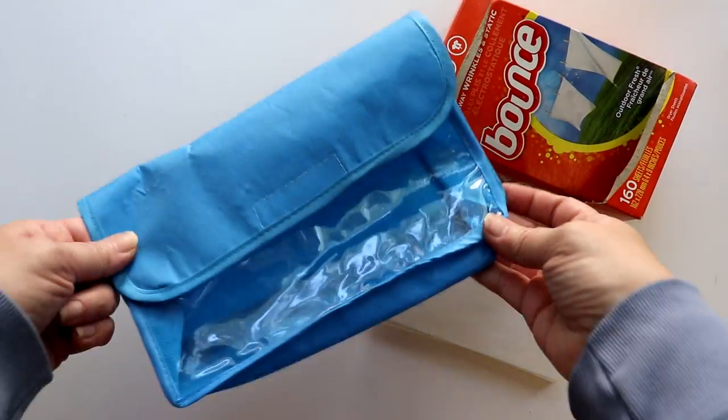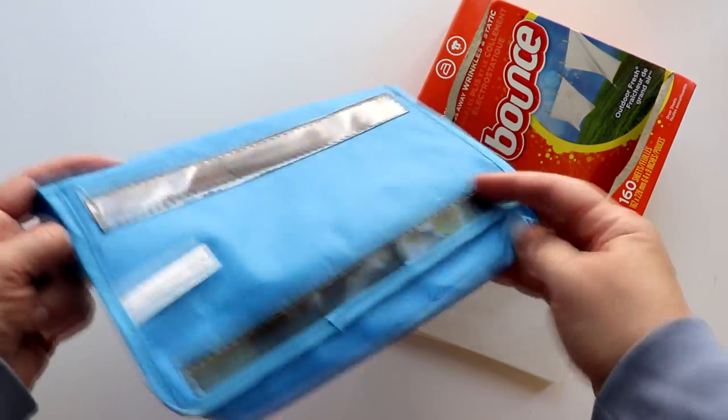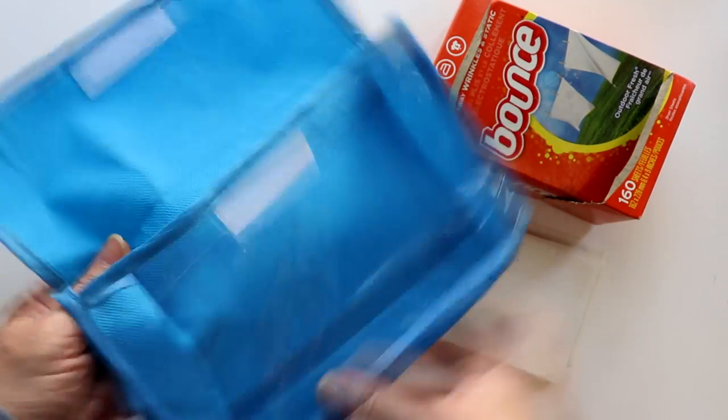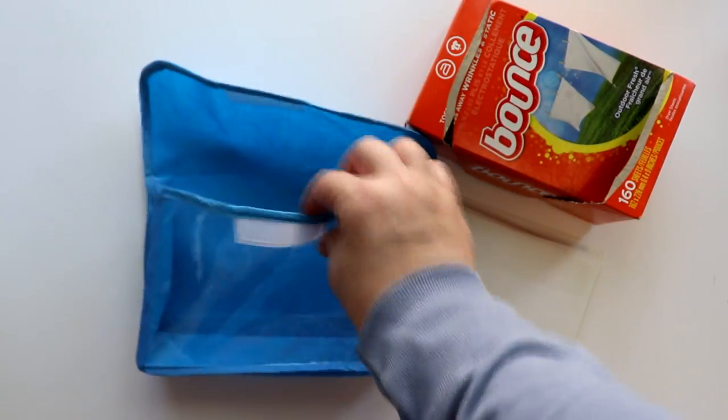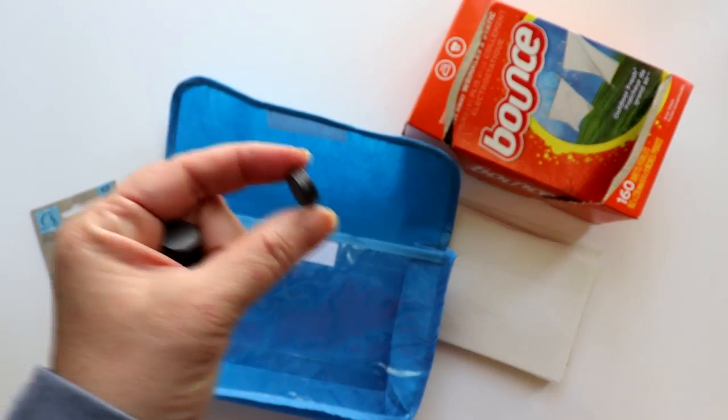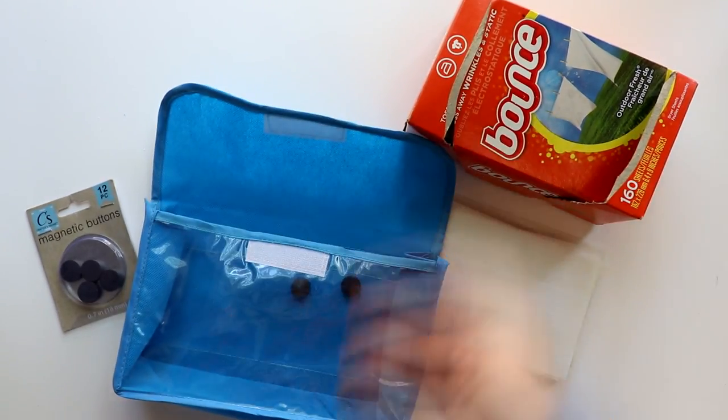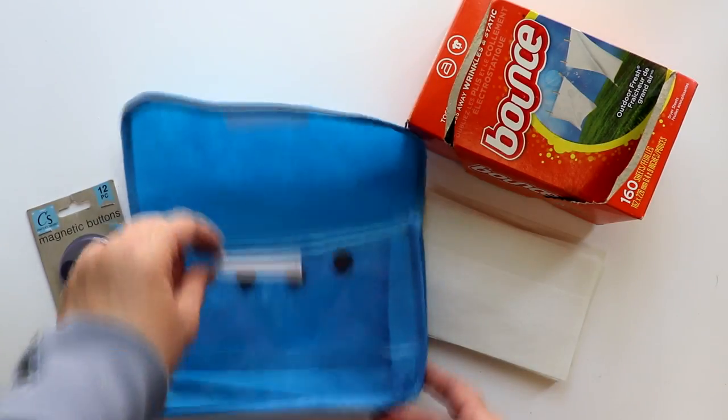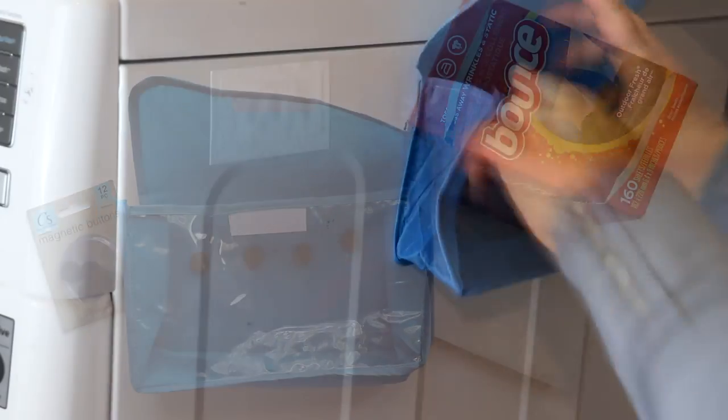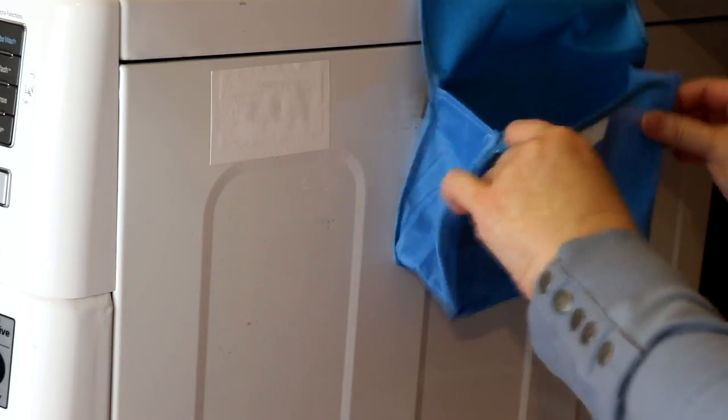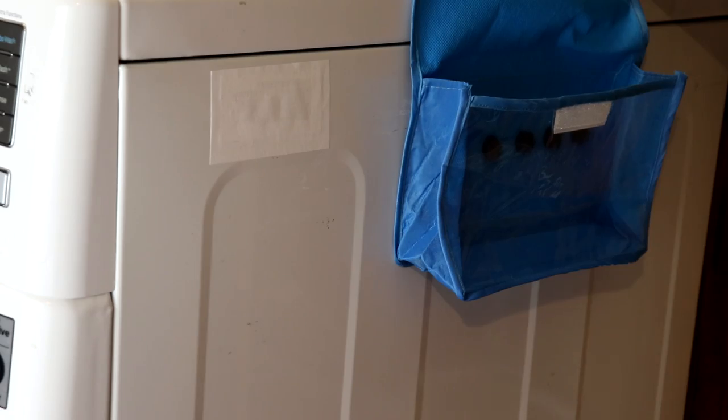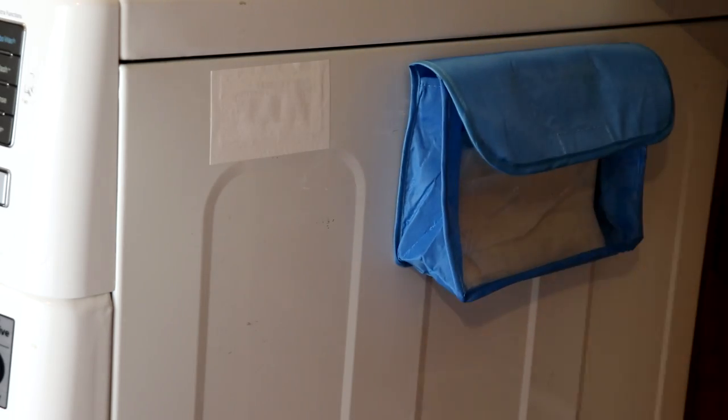Now, an even more convenient holder for your dryer sheets would be one of these magnetic files found in the teaching section. Unfortunately, the magnet on them is not very strong. To fix this, we can just reinforce with some of the craft magnets. You could glue to the back, but I just like to place them right along the inside and the magnetic force will hold in place, then just fill with the dryer sheets for a super handy dispenser.